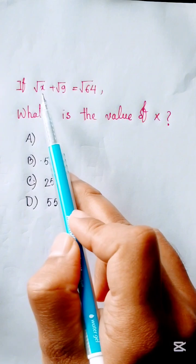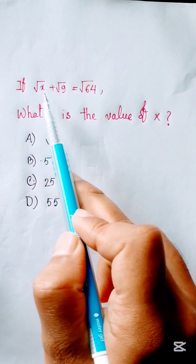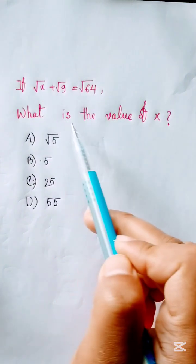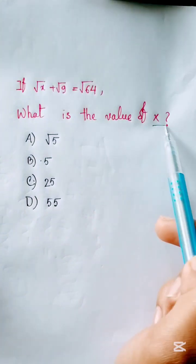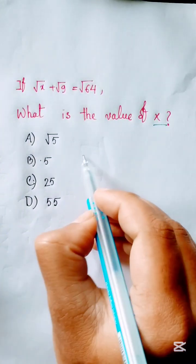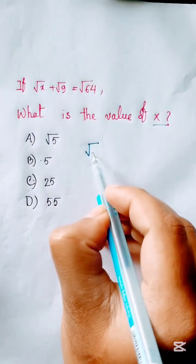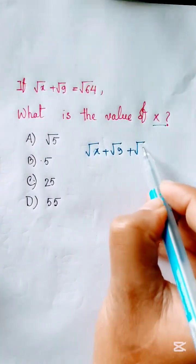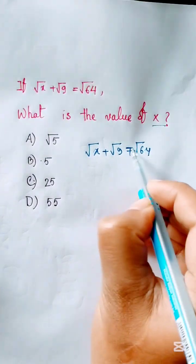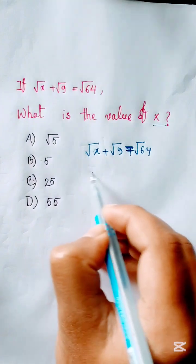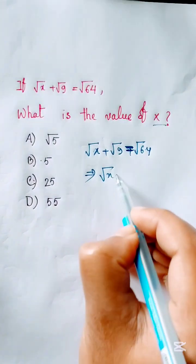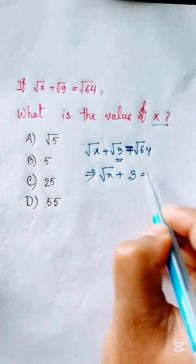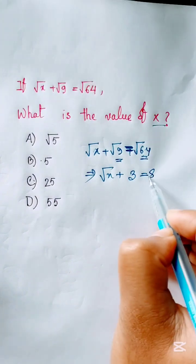If root x plus root 9 is equal to root 64, then what is the value of x? We know root x plus root 9 is equal to root 64, that is 8. And root 9 is 3.